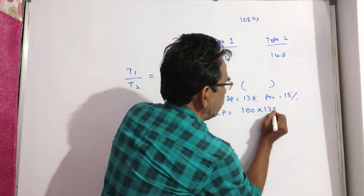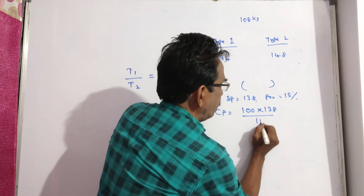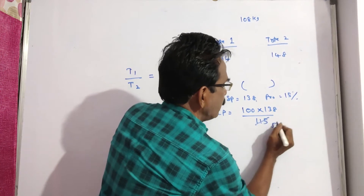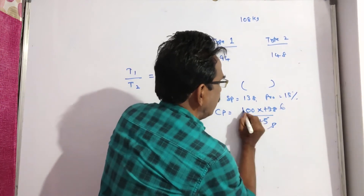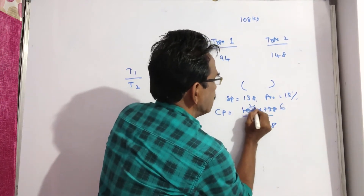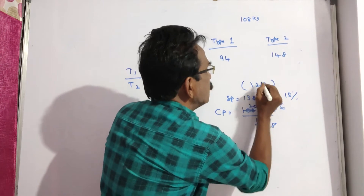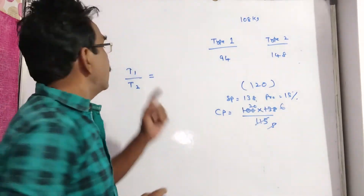Cost price is equal to 100 into sold price divided by (100 + profit). So cost price equals 100 × 138 / 115, which gives a mean price of 120.